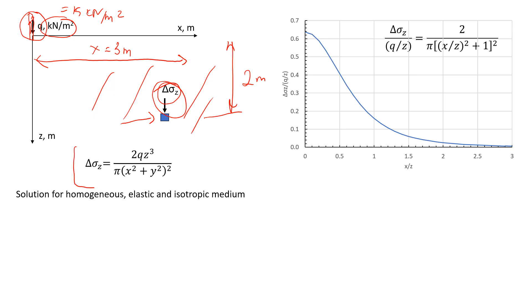The first method uses this equation, and the second is a graphical solution using this graph. Remember that this solution is made for a homogeneous, elastic, and isotropic medium, which soil mass typically is not in real life. But when we talk about very small stresses applied to soil mass, we can assume it behaves as a homogeneous, elastic, and isotropic medium.